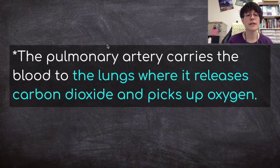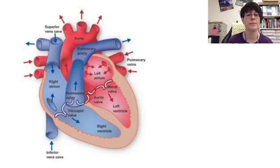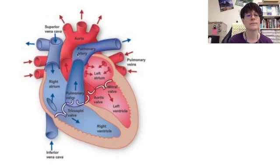The pulmonary artery carries the blood to the lungs where it releases carbon dioxide and picks up oxygen. The pulmonary arteries are going to the lungs — you could write 'to the lungs' at the ends of those arrows to help you remember. Pulmonary means lungs, and the blood goes there to release carbon dioxide and pick up oxygen.